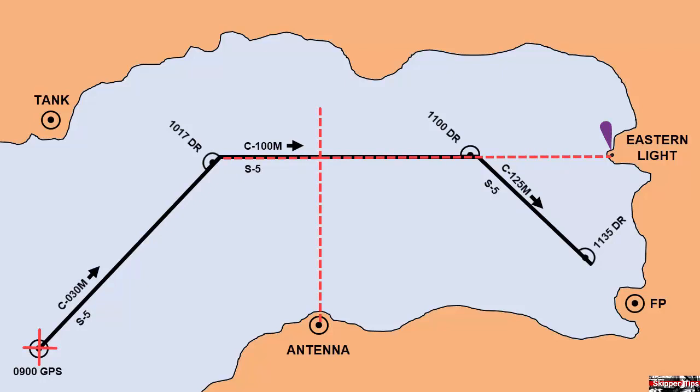On the third leg, notice how eastern light has now become a beam bearing to show our advance along the track. Ahead of our bow, we see a flagpole. We can take bearings to the flagpole to show whether we are right or left of our track line, and that way we can compensate for the wind or current that has set us off track.